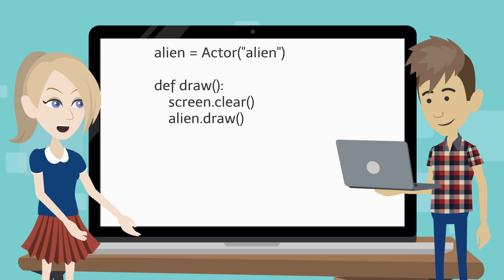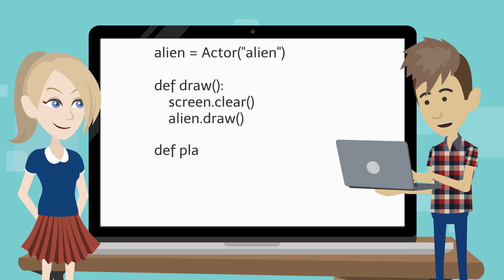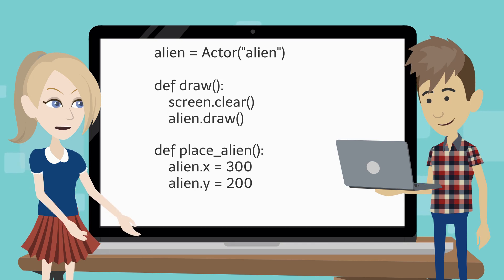How do we write the code? Write the code, which will place the alien at the coordinates 300, 200. The alien will be placed 300 pixels along the x-axis, horizontal. The alien will be placed 200 pixels down the y-axis, vertical. Is that all?